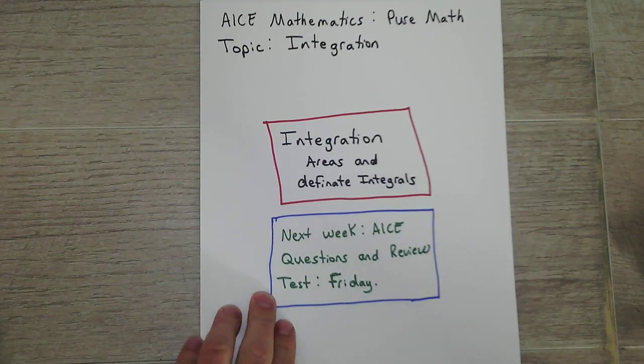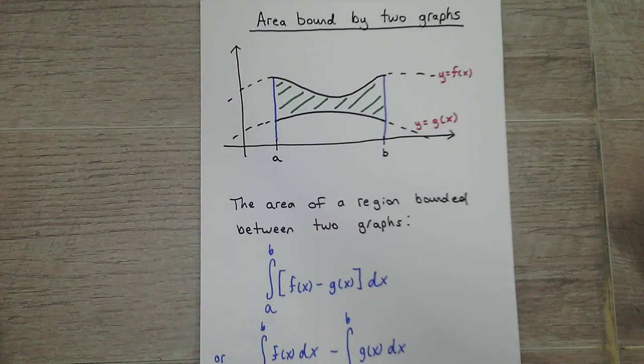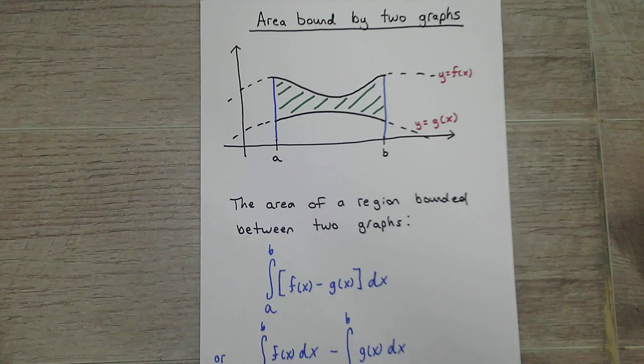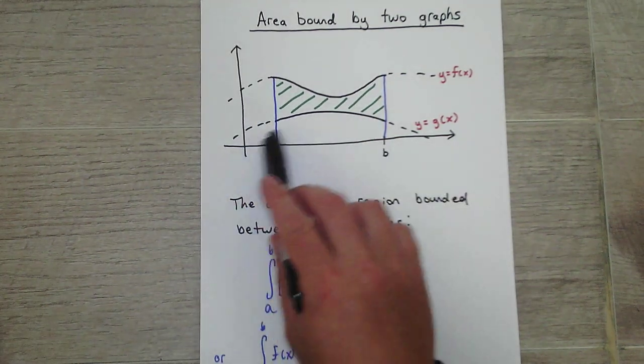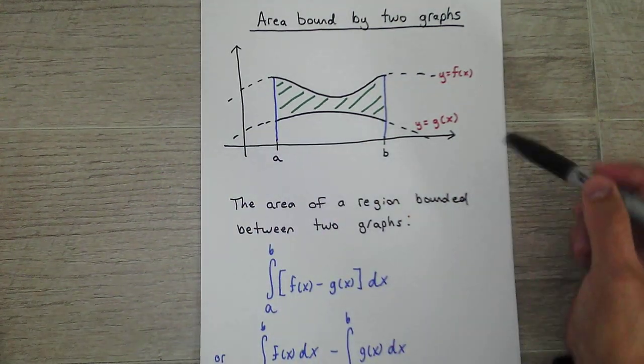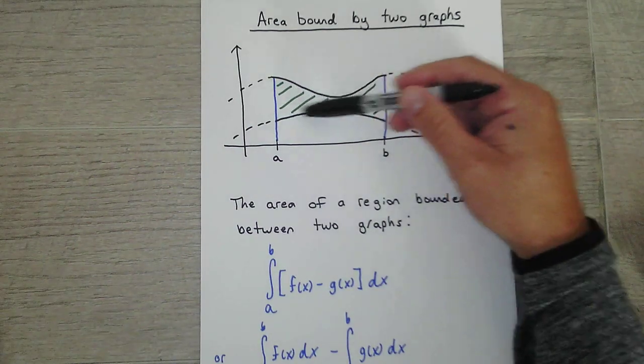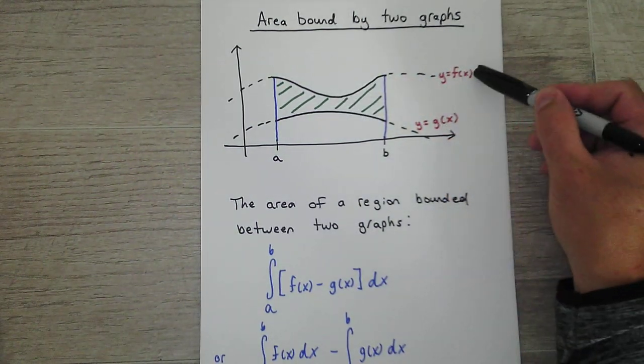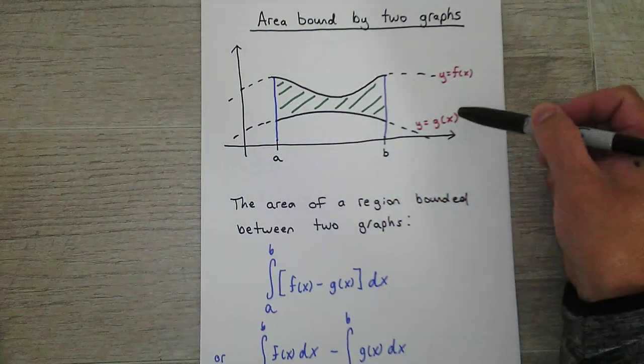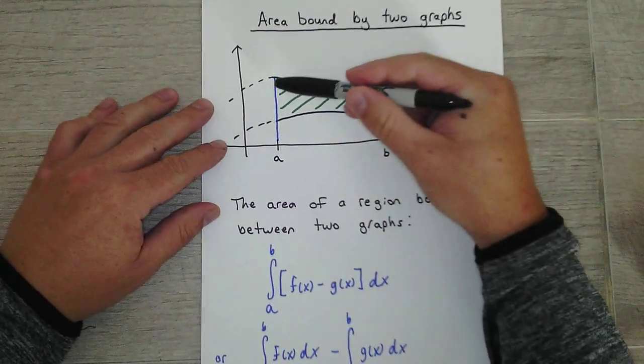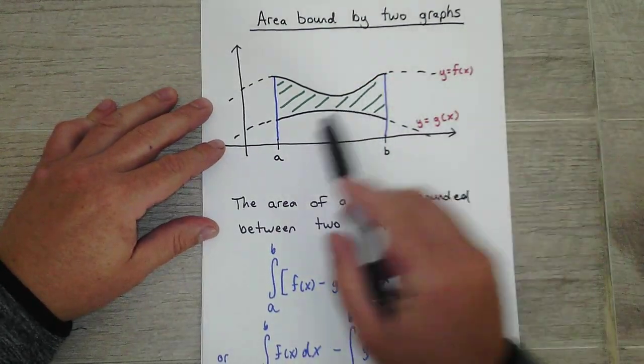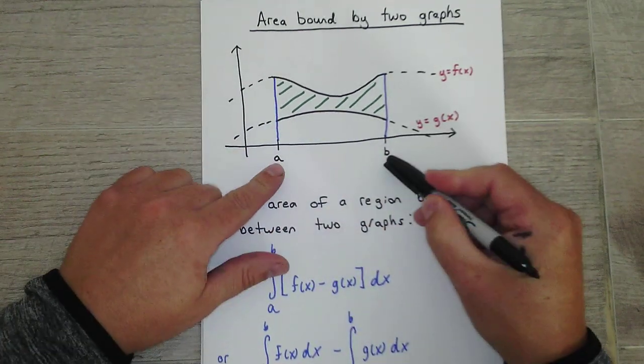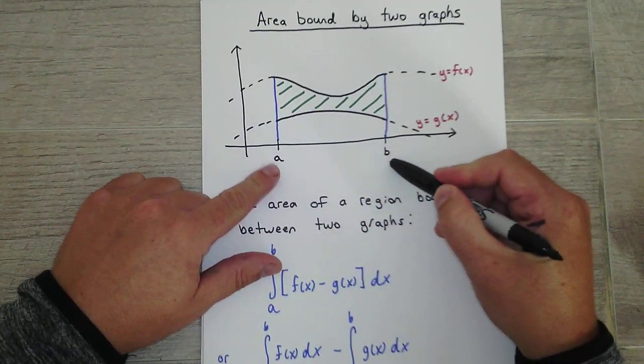Okay, so area between two graphs. This is basically what most of your ACE style questions will look like. You can see there's two different graphs on here and they want you to find the area that's bounded between these two graphs. So if we have this graph as f of x and this graph as g of x, the way you find the area between the two... the blue here are your limits of integration still.